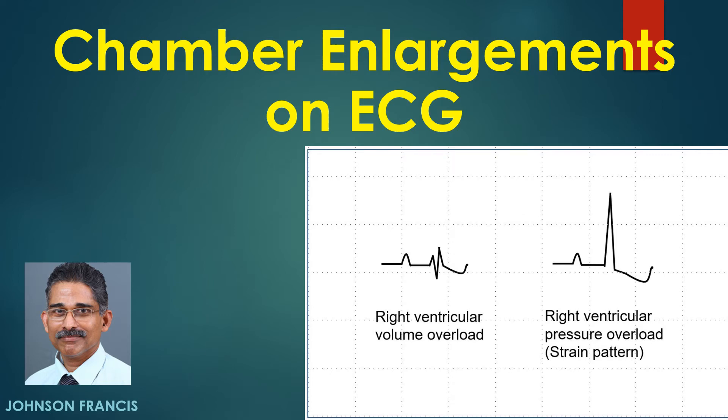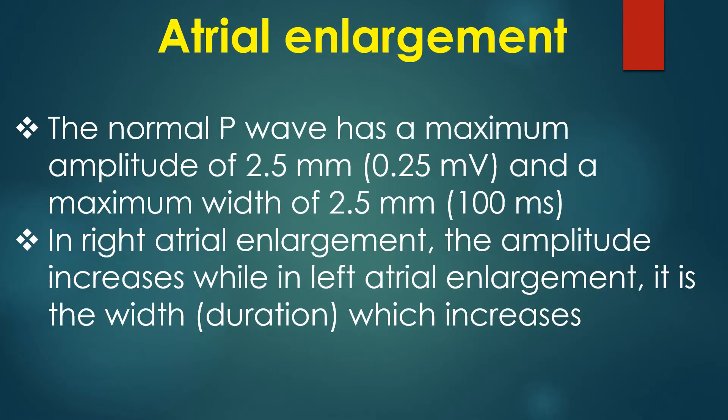Discussion on features of cardiac chamber enlargements on ECG. Atrial enlargement produces changes in the P wave. The normal P wave has a maximum amplitude of 2.5 mm and a maximum width of 2.5 mm.